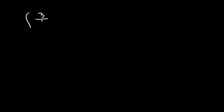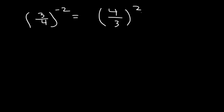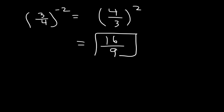So, let's say if we have 3 over 4 raised to negative 2. If we simply flip the fraction — move the 3 to the bottom and the 4 to the top — the exponent will change sign; it's going to be positive 2. And now we can square each number. 4 squared, which is 4 times 4, is 16. 3 squared, 3 times 3 is 9. So the answer is 16 over 9.